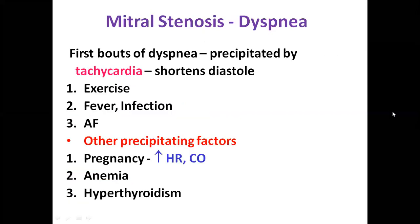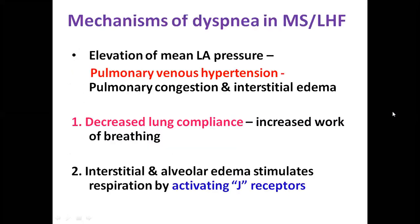The first bouts of dyspnea are usually precipitated by tachycardia. Patients will be asymptomatic at rest but become symptomatic with exercise, onset of fever, infection, or very commonly atrial fibrillation with fast ventricular rate — because tachycardia shortens diastole and gradients increase four times when heart rate doubles. Other precipitating factors include pregnancy, where symptoms may appear in the late second or early third trimester due to increased heart rate and cardiac output, and hyperdynamic states like anemia and hyperthyroidism.